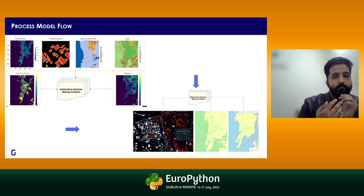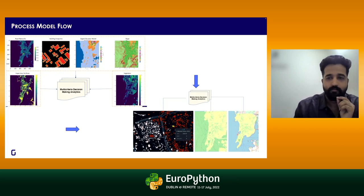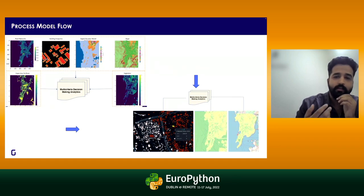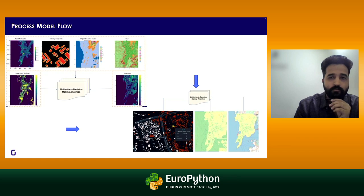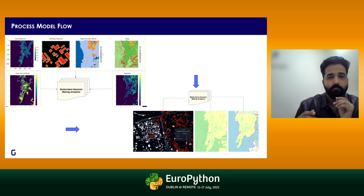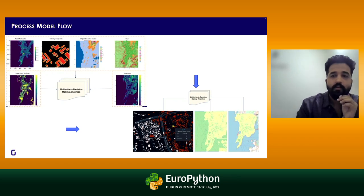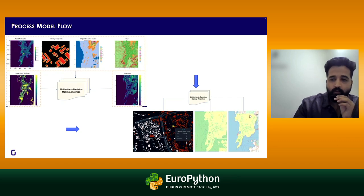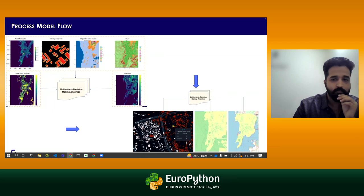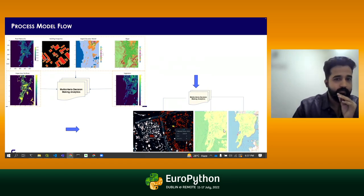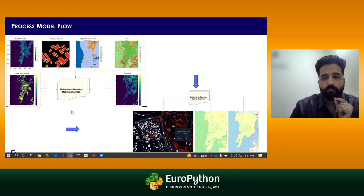We assigned different weights to different input parameters and created a multi-criteria decision making system, also known as analytical hierarchy process (AHP). We give hierarchical weights and it produces a consistency ratio. For all these input models, the consistency ratio should be less than 10%, and fortunately all our input weight models fall into that category, giving us household-level risk scores.